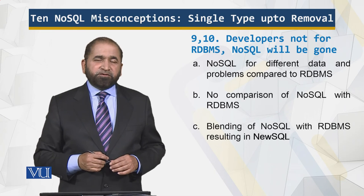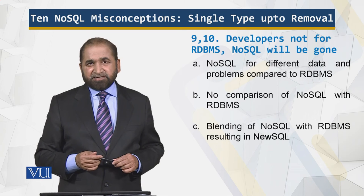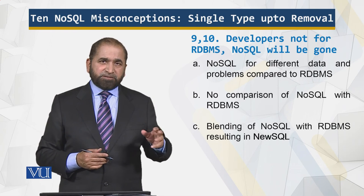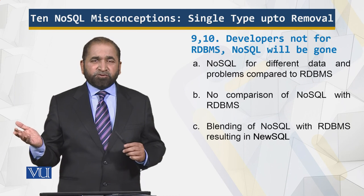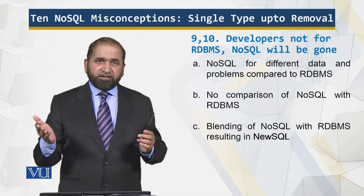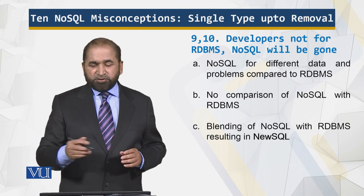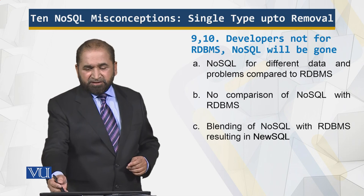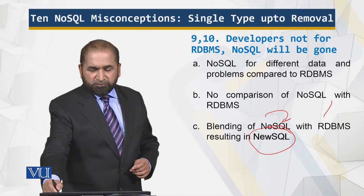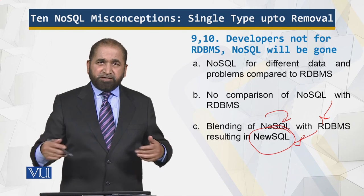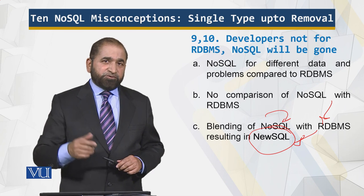The misconception that NoSQL developers don't do RDBMS is totally wrong and incorrect. RDBMS addresses different types of problems, and NoSQL addresses different types of problems — there is no point in comparing apples with motorbikes; that comparison is irrelevant. As for the idea that NoSQL will be gone, we now also have NewSQL, which is a blending of NoSQL with RDBMS. NoSQL is evolving, and if it had no future, why would NewSQL exist?